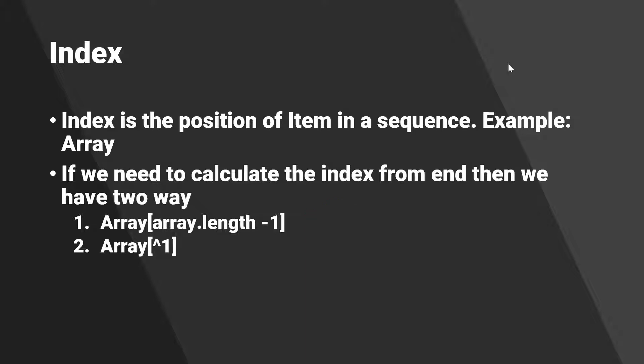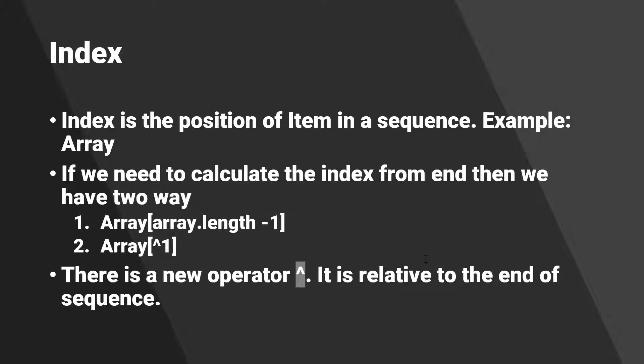But now in C# 8, something new has been introduced. There is a new caret symbol — a little umbrella symbol. If you are using this symbol, you do not have to pass the entire expression like array.length minus one. This symbol is available on the sixth key of your keyboard, and it is relative to the end of the sequence, whereas the regular index starts from the beginning.